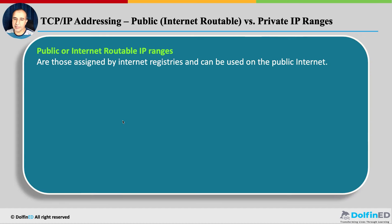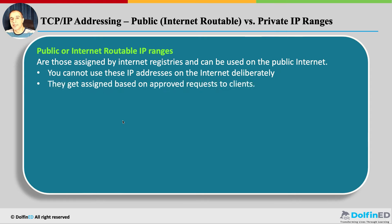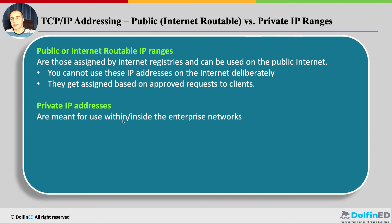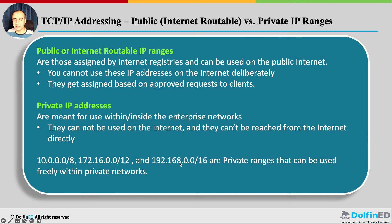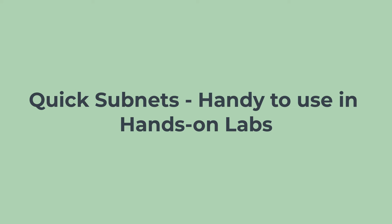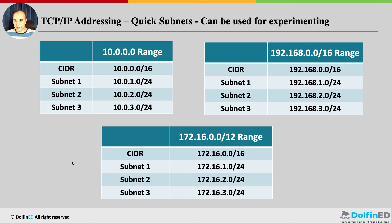Public or internet-routable IP addresses are assigned by internet registries — you cannot just use any one of them. Private IP addresses have specific ranges that anyone can use internally, but they won't be routable on the internet — internet routers drop traffic sourced from private IPs. Common private ranges include 192.168.x.x (used in home Wi-Fi), 172.16 through 172.31, and 10.0.0.0/8 — all usable without permission from anyone.